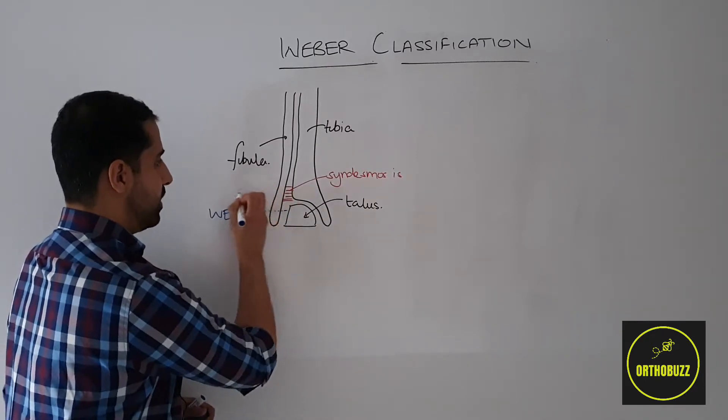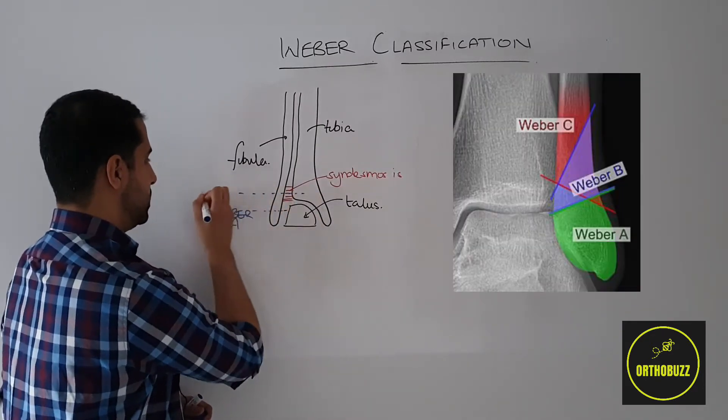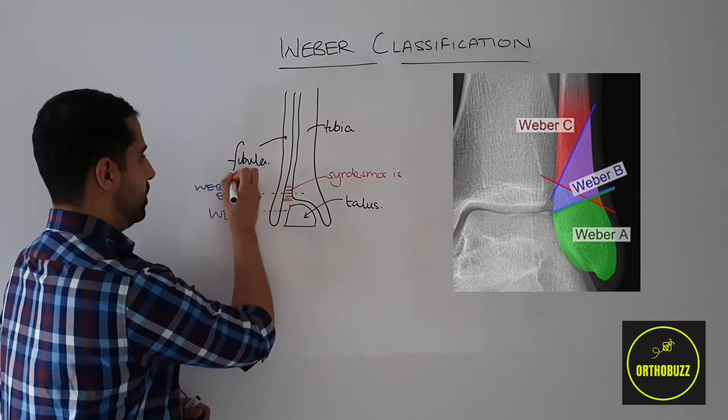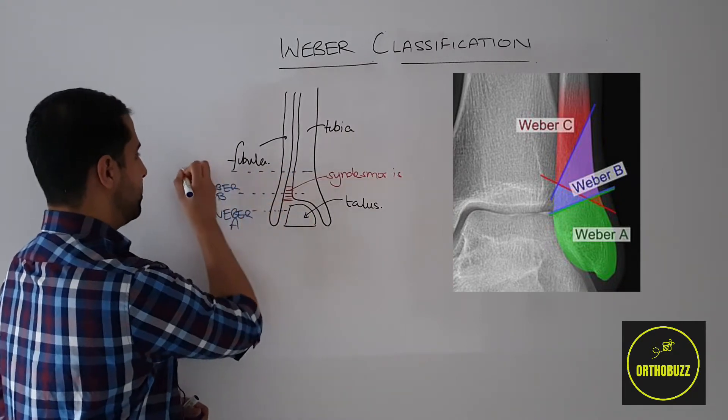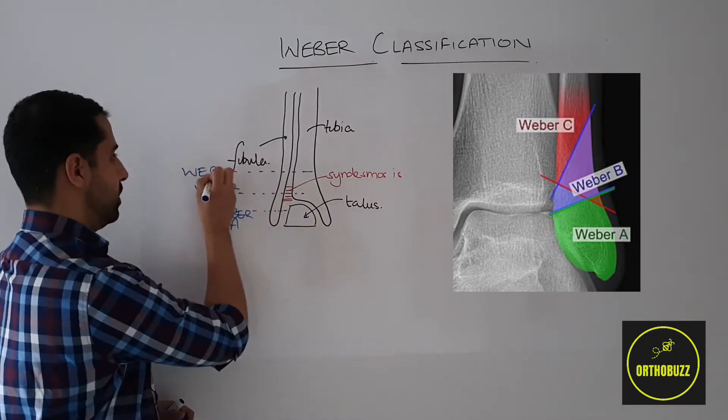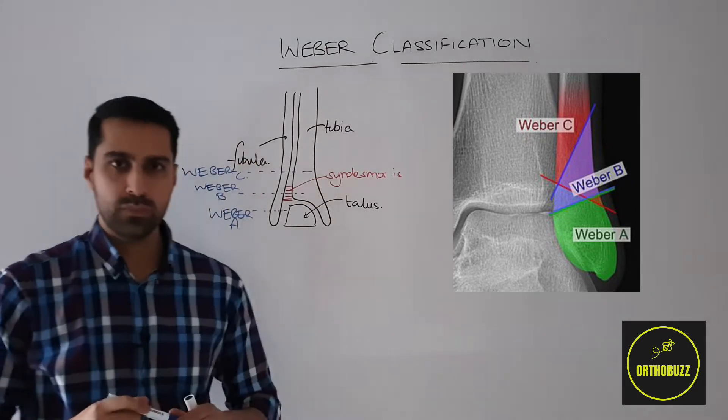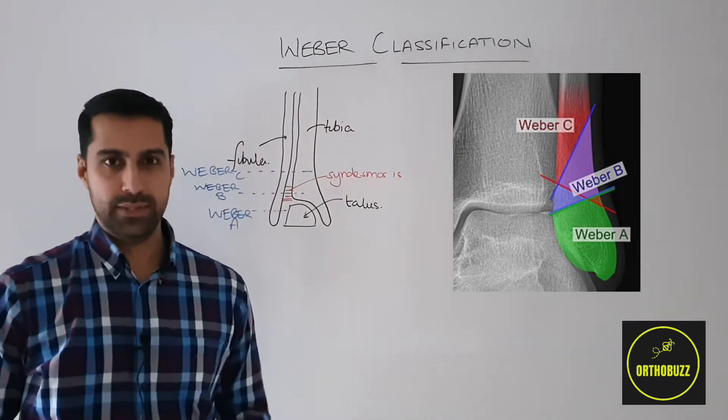A fracture occurring at the level of the syndesmosis is known as a Weber C fracture. Now let's have a look at each of these in a bit more detail.